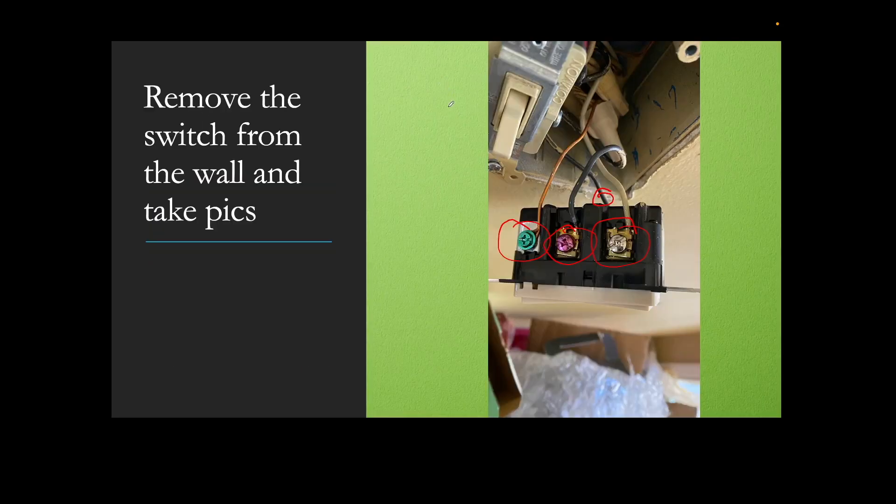Next thing you want to do is get it out of the wall socket. I've highlighted a few things here. You've got your four wires that are going to come in on a basic installation. Go ahead and take a picture just to make sure you know where those wires go back, that way you don't have to guess.